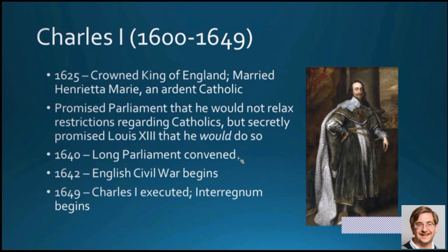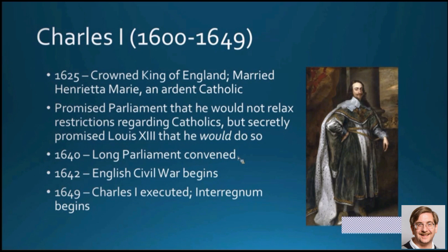Charles I was crowned King of England in 1625. He married Henrietta Marie, an ardently Catholic French princess — so ardent that when they tried to have an English wedding ceremony, she would not attend, having attended a separate ceremony in France instead. Charles promised Parliament that he would keep all the restrictions regarding Catholics in place, but in correspondence with Louis XIII he secretly promised to relax those restrictions — saying one thing to one group and another thing to another.